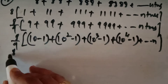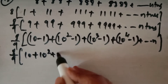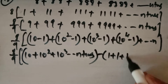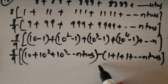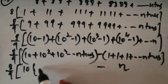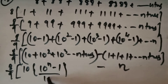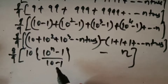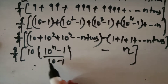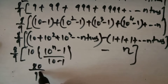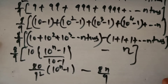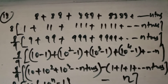Separate into two series: (8/9)[10 + 10² + 10³ + ... up to n terms] minus (8/9)[1+1+1... n times]. The second part gives 8n/9. The first part is a GP with first term 10 and common ratio 10, so its sum is (10/9)(10ⁿ - 1). Therefore the total sum is (80/81)(10ⁿ - 1) minus 8n/9.